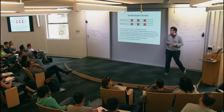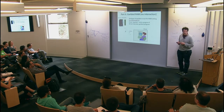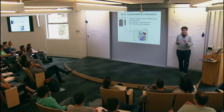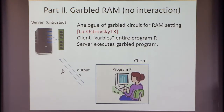Let me now move on to the next part: garbled RAM. Garbled RAM is an analog of garbled circuits that works in the RAM setting. It was an idea introduced by Lu and Ostrovsky. The idea is that the client will take the entire program he wants to execute on this remotely stored data, garble it, do something to it, produce this garbled program P-tilde, send that to the server, and the server can execute it on the outsourced memory and give back the output to the client.